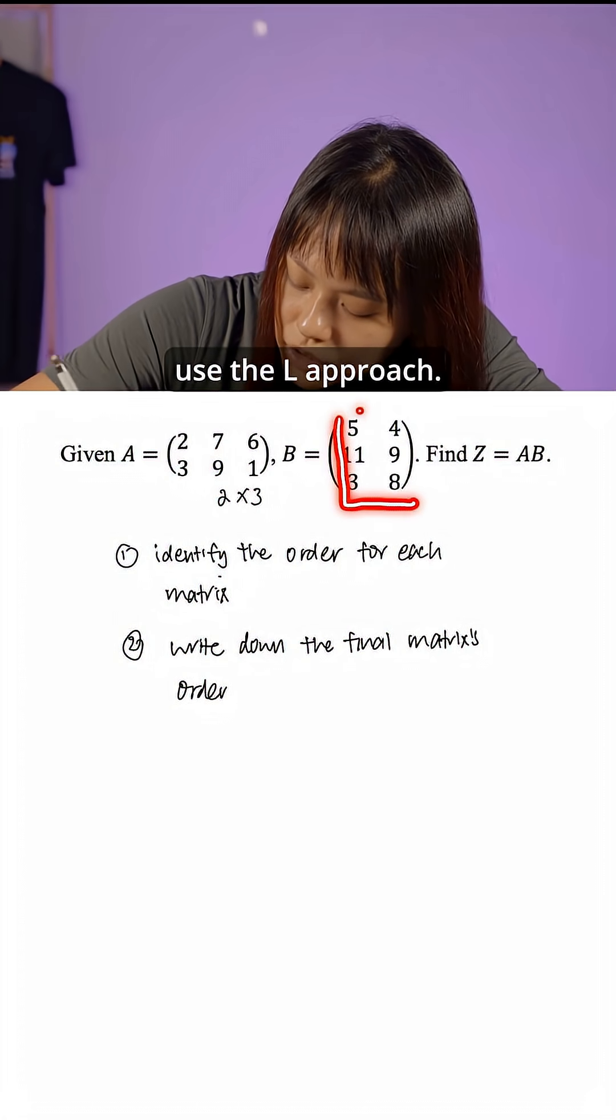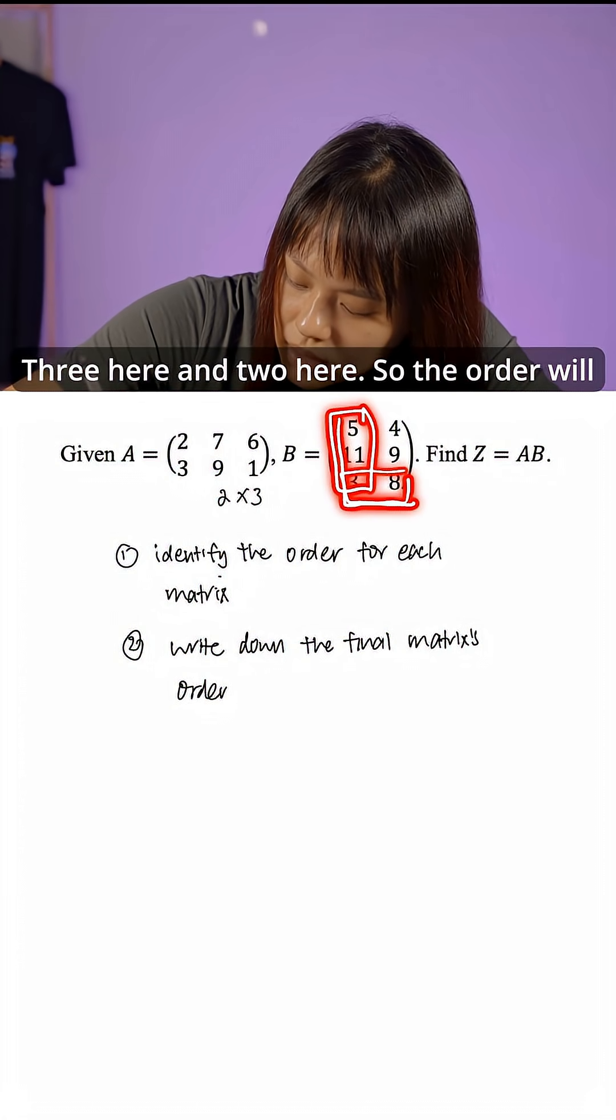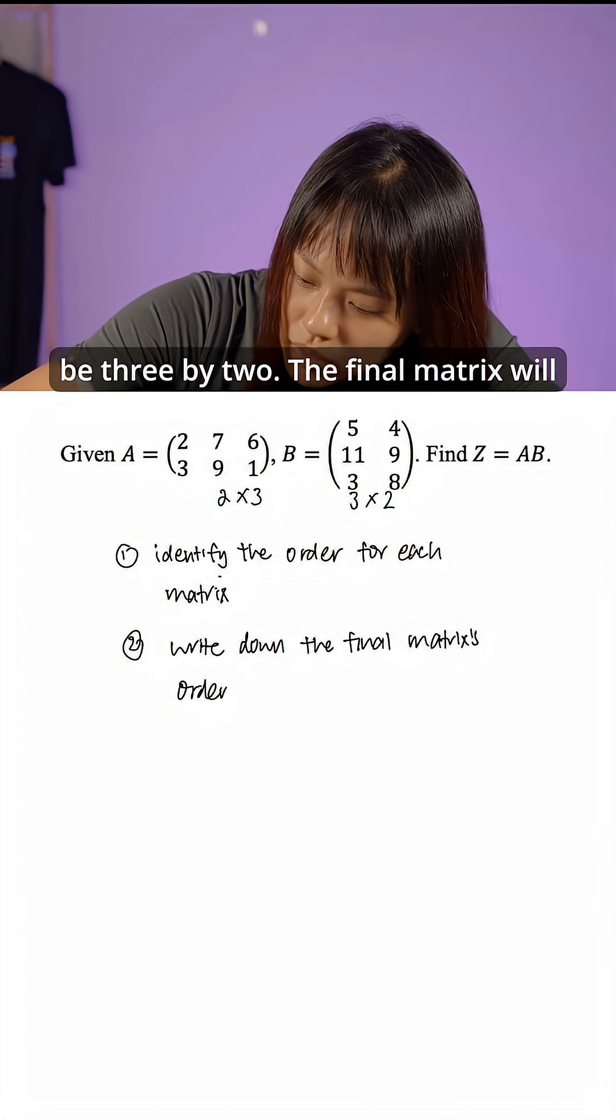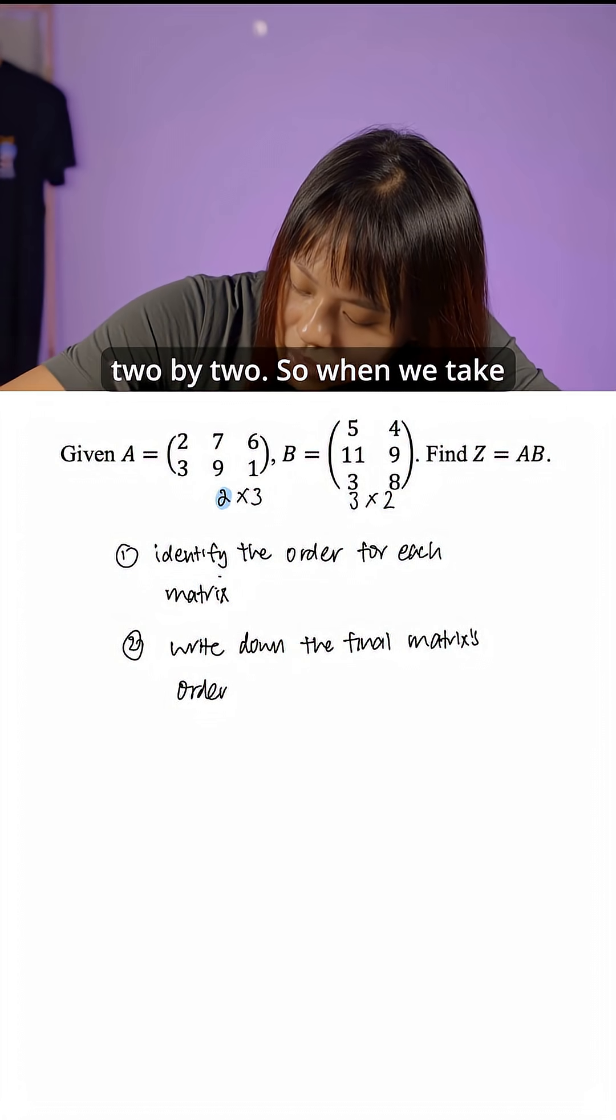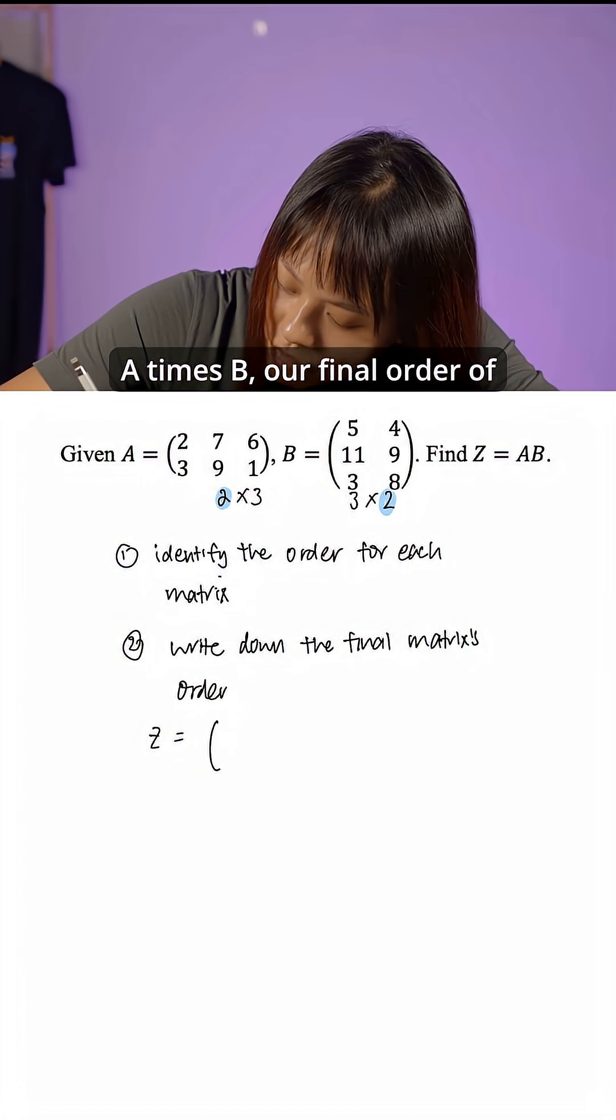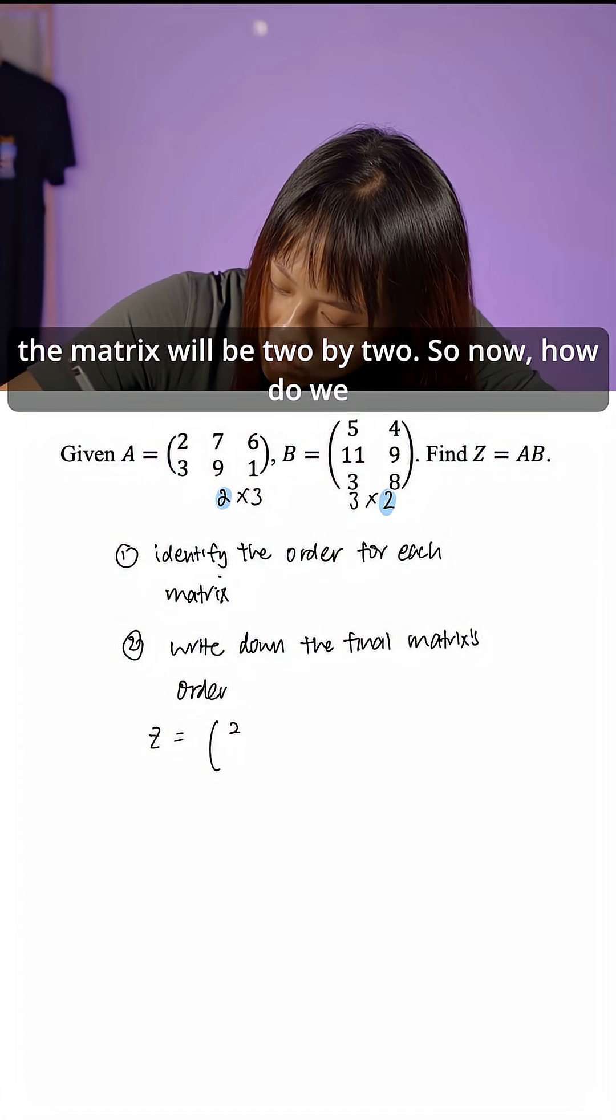The next one, again you can use the L approach. 3 here and 2 here, so the order will be 3 by 2. The final matrix will be the number at the outside, meaning 2 by 2. So when we take A times B, our final order of the matrix will be 2 by 2.